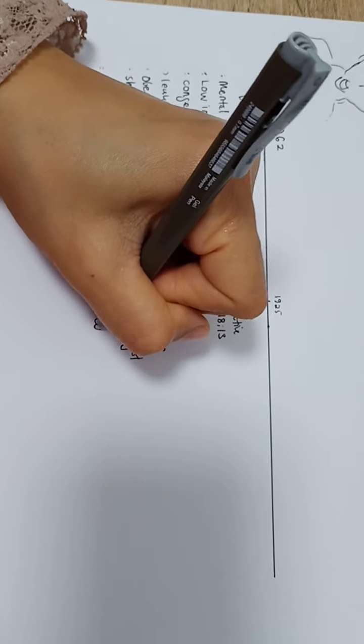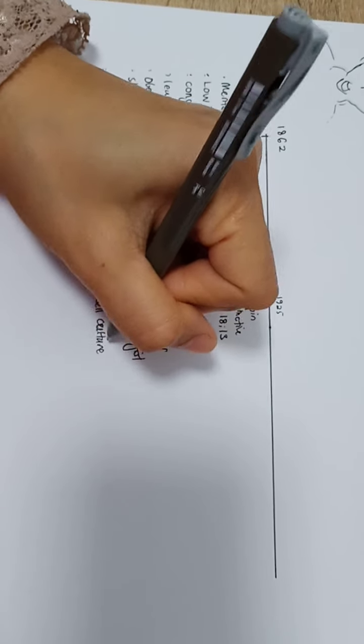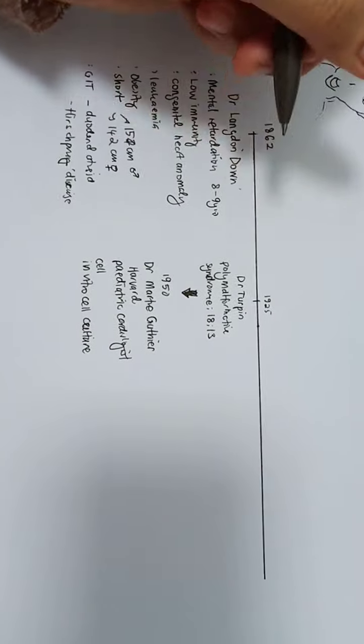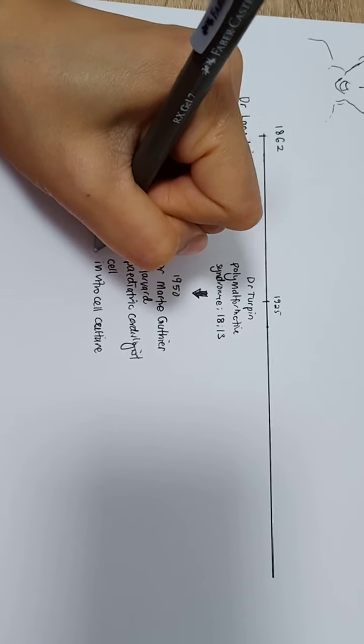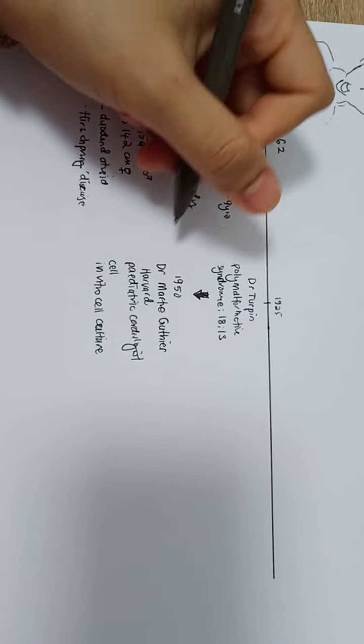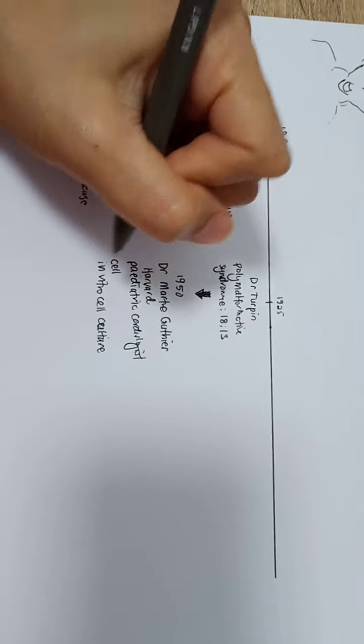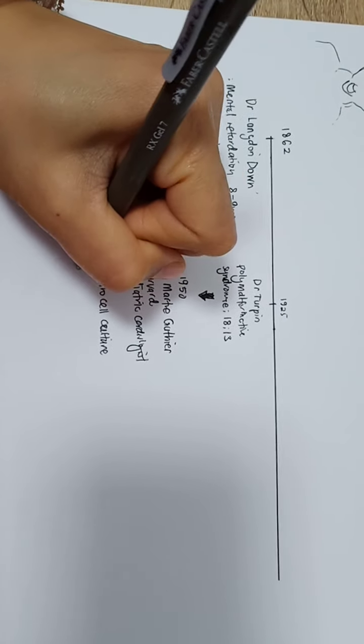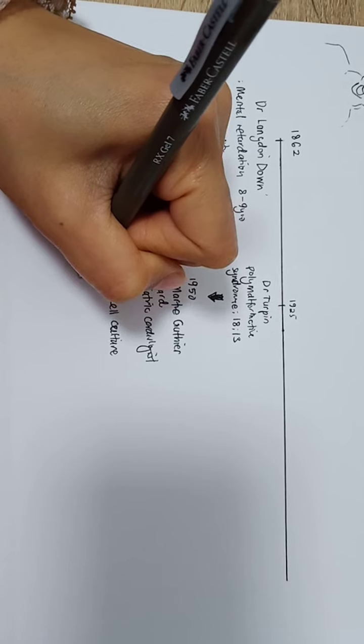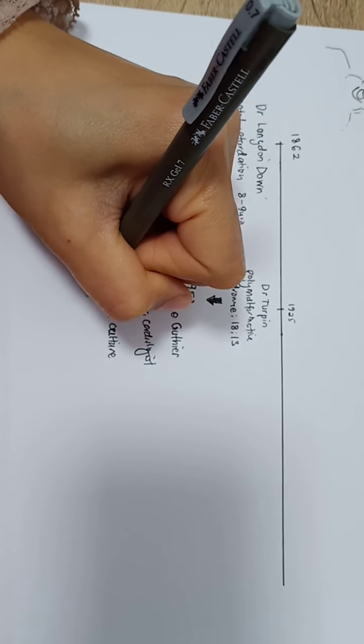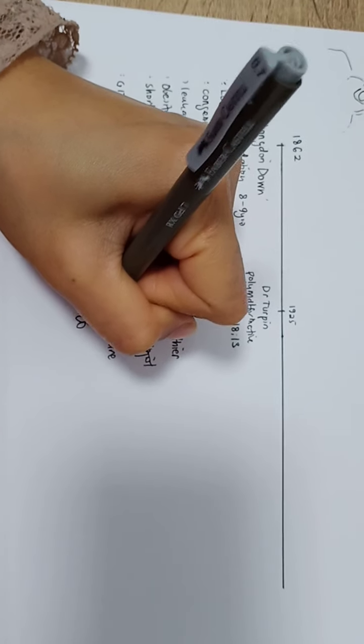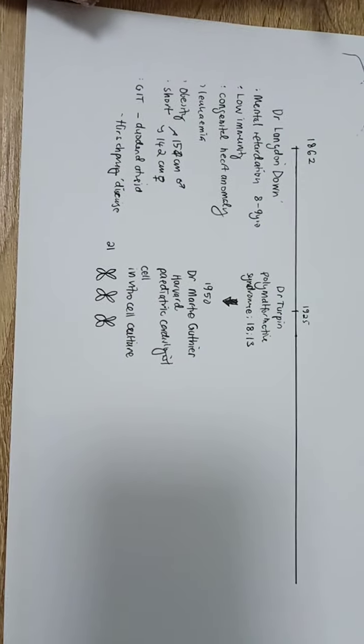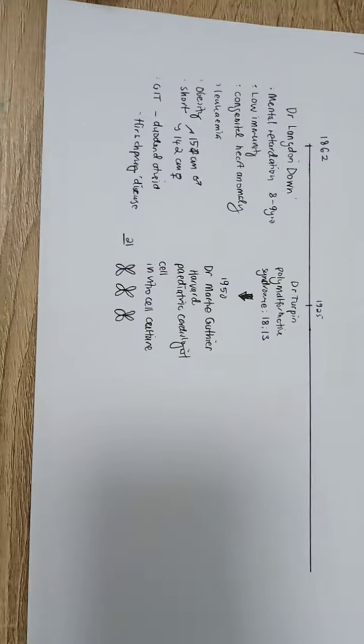She used her own techniques, and at one point because of the limitations of the resources and funds in France, she needed to use her own money to buy the lab apparatus to do the cell culture. Finally, in 1956-57 she found out about the 21-chromosome trisomy.